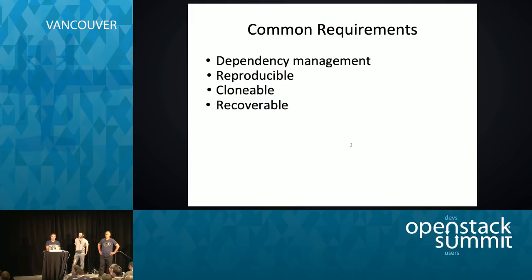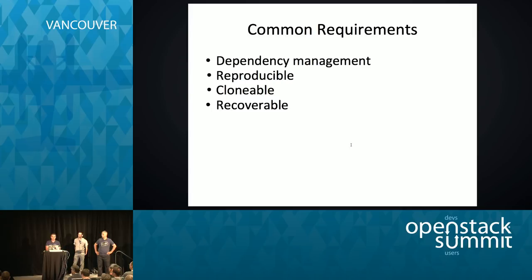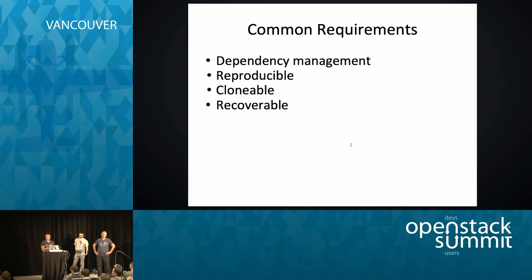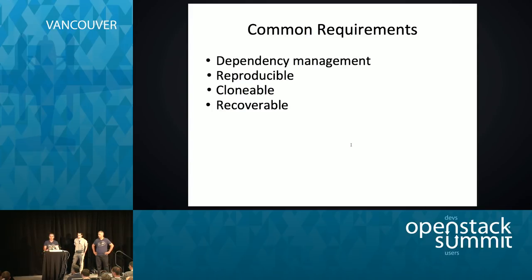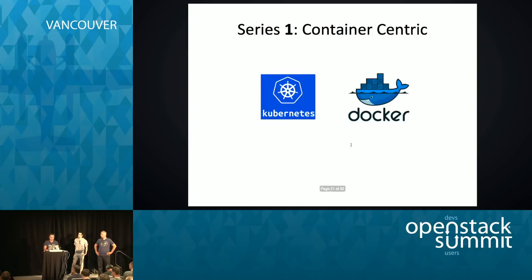That brings us to a few common requirements we want from an orchestration tool. First, dependency management — we need to be able to tell the tool to create this before that, and tell this where that is located. Second, reproducibility — we need to run the same plan over and over and achieve the same end result. Third, clonability — run the same plan side by side multiple times for QA, pre-prod, testing, and production. And fourth, recoverability — if my execution fails for some reason, like exceeding quotas or something breaking in the middle, I need to be able to clean up the environment and start over without failing.